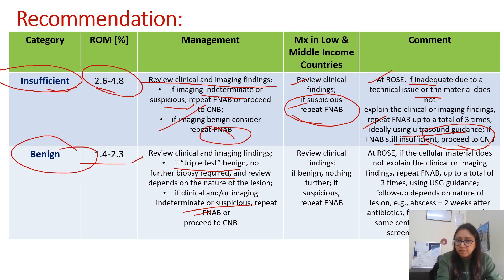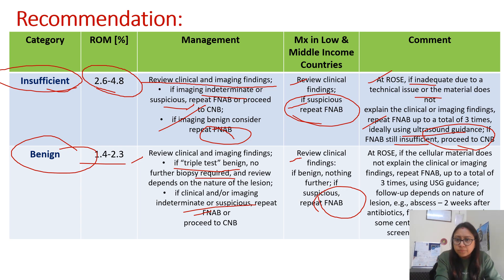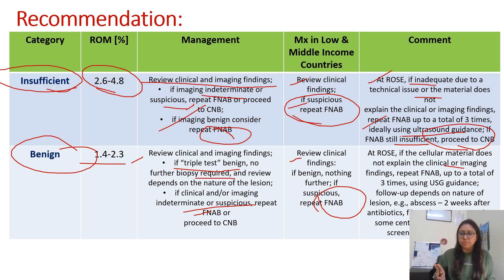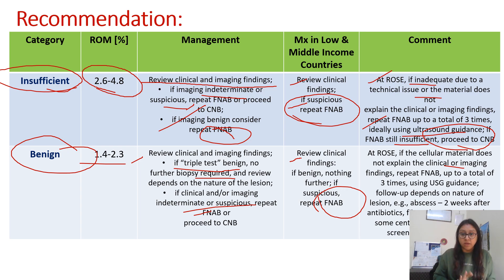In low and middle income countries, we review clinical details; if benign, nothing further; if suspicious, repeat FNAC. At ROSE for the benign category: if the cellular material does not explain the clinical or imaging finding, repeat FNA up to three times, possibly under USG guidance, then follow the lesion. For example, if an abscess is present and we give a benign report, two weeks after antibiotics we repeat ultrasound before confirming benign. Discrepancy between clinical, imaging, and cytological findings should prompt further action.